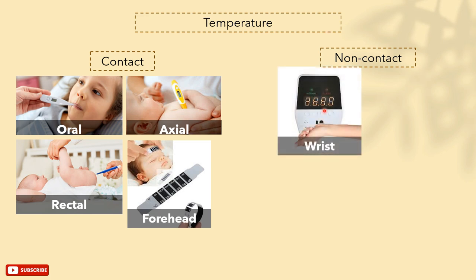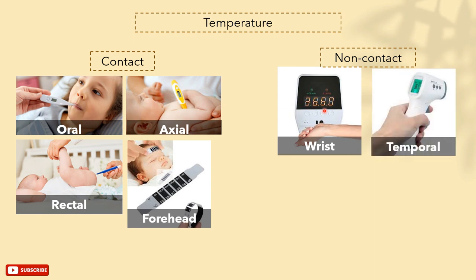Non-contact thermometers, like wrist and temporal scanners, use an infrared scanner that measures the temperature of the air moving over the surface of the skin, resulting from the movement of blood in either the radial artery or the temporal artery.